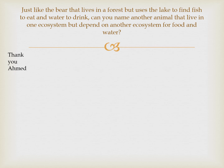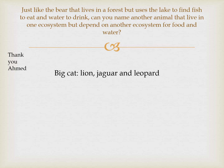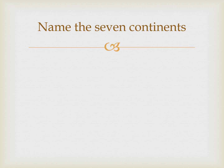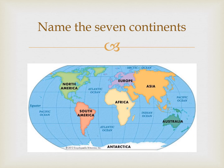Just like the bear that lives in a forest but uses the lake to find fish to eat and water to drink, can you name another animal that lives in one ecosystem but depends on another for food and water? Thank you to Ahmed for this answer — big cats: lion, jaguar, and leopards. They don't live in the water but they hunt and rely on it for food sometimes. Name the seven continents: North America, South America, Europe, Asia, Africa, Australia, and Antarctica.